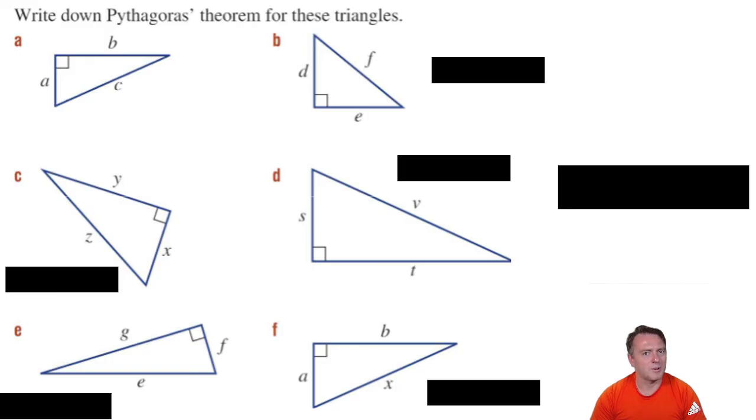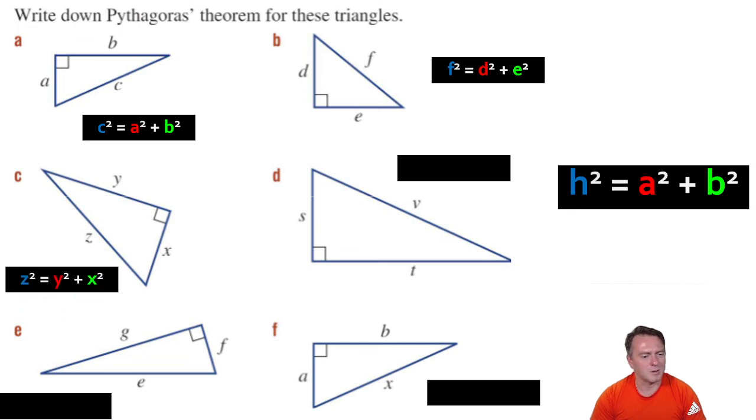Cool. So what you should have found with the first one, the hypotenuse is c. So therefore, it would be c squared equals a squared plus b squared. The next one with b was f squared is equal to d squared plus e squared. With c, you should have found z squared equals y squared plus x squared. d, you should have seen v squared is equal to s squared plus t squared.